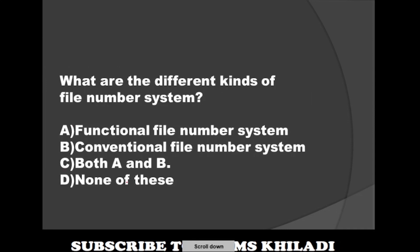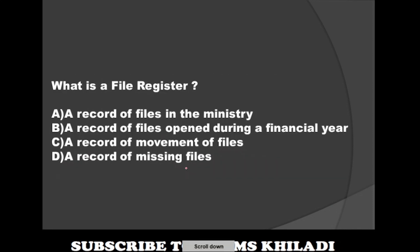Question: What are the different kinds of file number systems? Option A: Functional file number system. Option B: Conventional file number system. Option C: Both A and B. Option D: None of these. The correct answer is Both A and B. Next question: What is a file register? The correct answer is Option A — a record of files opened during a financial year.